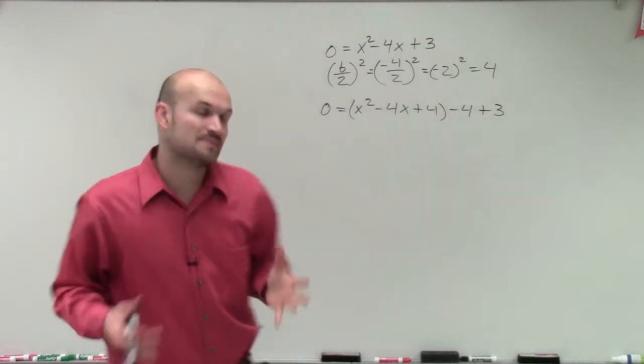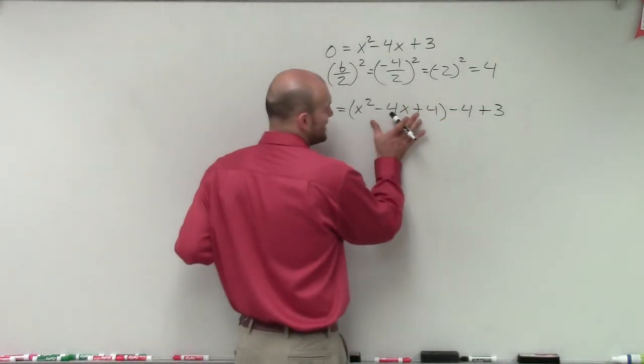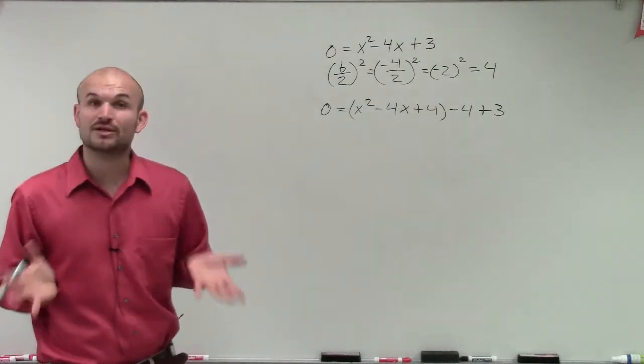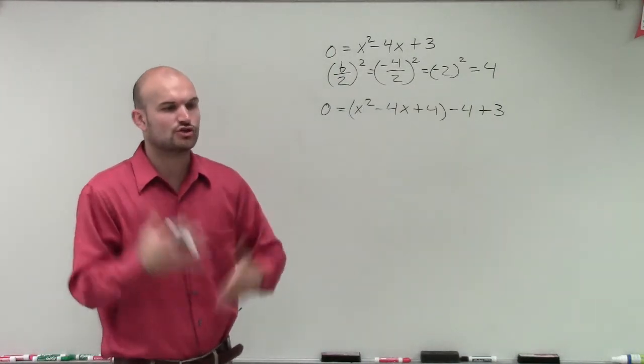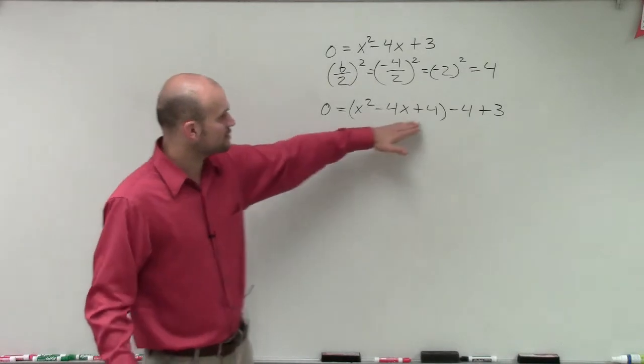But I'm keeping those parentheses because I'm going to rewrite this as a binomial squared. That's the whole part of completing the square. You're creating a perfect square trinomial.